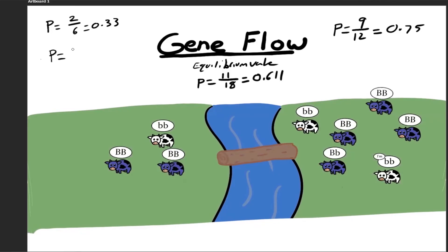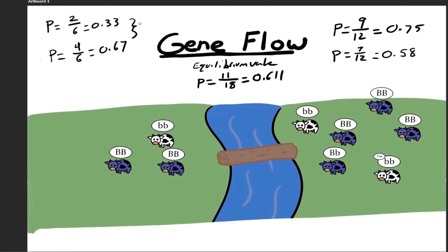A migration event occurs where one cow goes to the right population and one cow goes to the left population. Looking at the allele frequencies again, the left side gets 0.67 this time, while the right side ends up with an allele frequency of 0.58. Looking at the difference before and after: the smaller population sees a change of 0.34, while the larger population sees a change of 0.17.